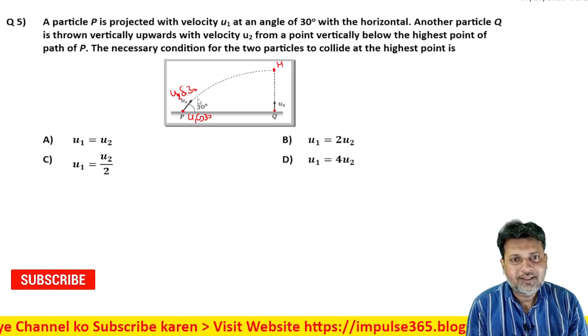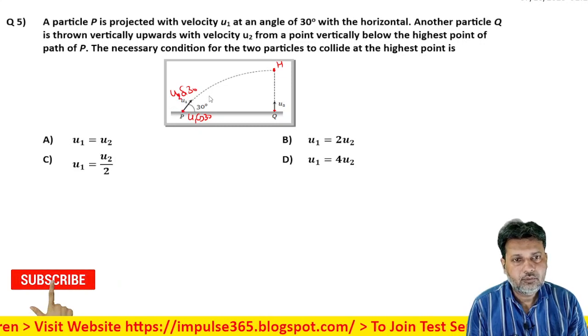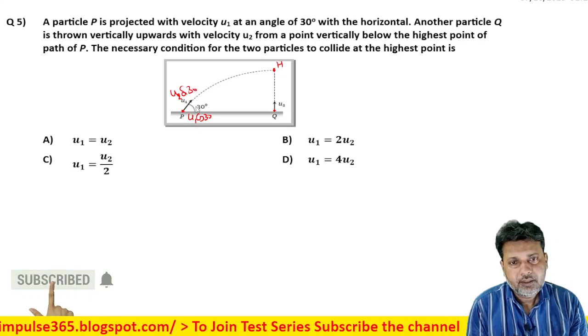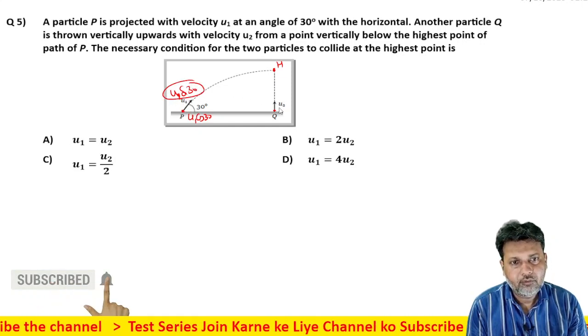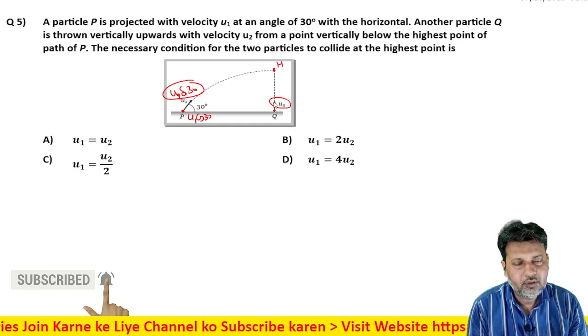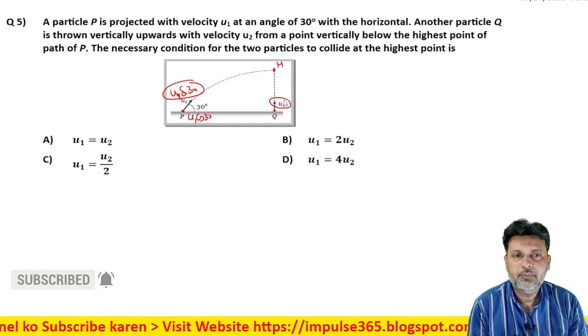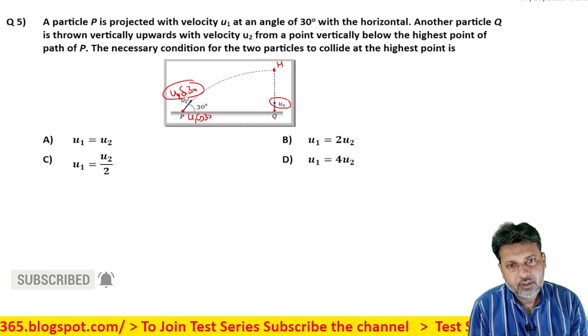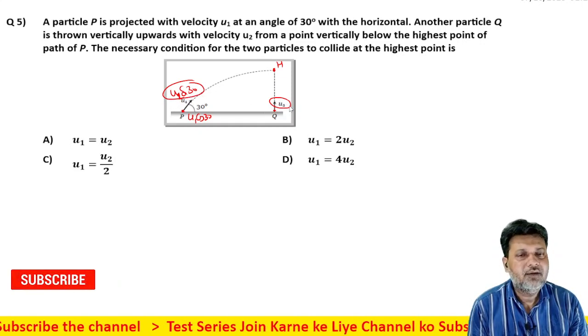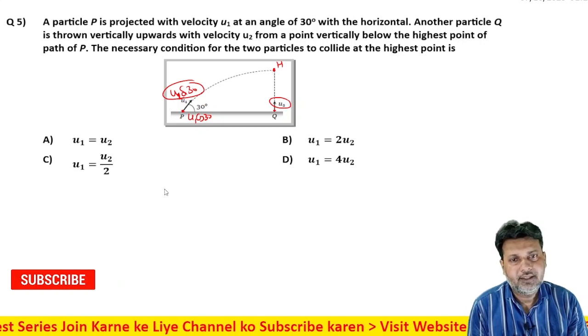Toh ye kab collide karenge, iski condition batani hai. Toh condition simple si hai ki jo is velocity ka vertical component hai, wo is particle ke velocity ke vertical component ke barabar hona chahiye. Toh iska sin 30 ke barabar hona chahiye, tabhi ye collide karega.